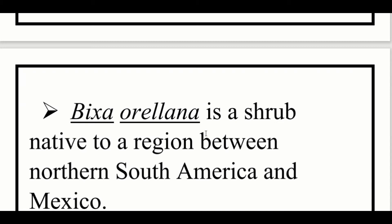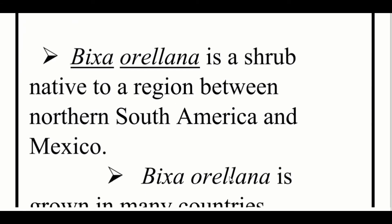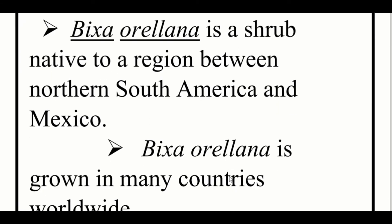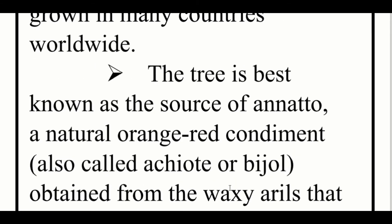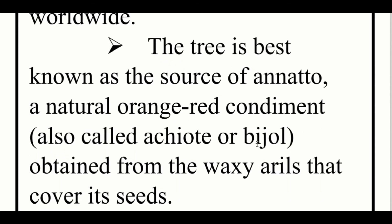Bixa orellana is a shrub native to the region between North and South America and Mexico. Bixa orellana is grown in many countries worldwide. The tree is best known as the source of annatto, a natural orange-red condiment also called achiote or bijol. The product is obtained from the waxy arils that cover its seeds.